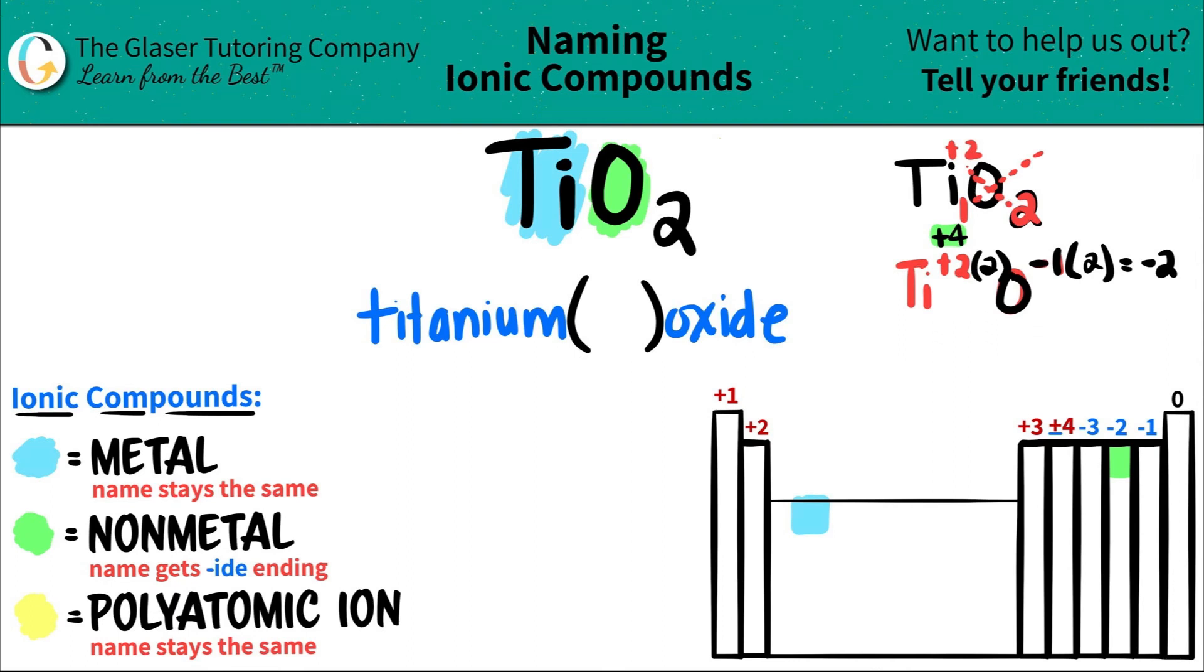And that is the charge that goes inside here. So I'm going to put a four here, which is like an IV Roman numeral. And now you are completely done. So TiO2 is just titanium four oxide. This one was simplified. You could always simplify ionic compounds.